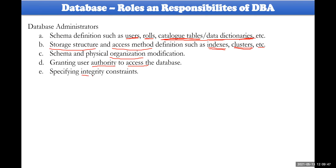The DBA also specifies integrity constraints on catalog and data dictionary tables — not on user tables. User tables are taken care of by the users themselves. Whatever catalogue tables, roles, and users the DBA creates, integrity constraints are applied on those by the database administrator. We will discuss integrity constraints further; in unit number one we take things with some assumptions, and from unit number two onwards we commit to SQL.